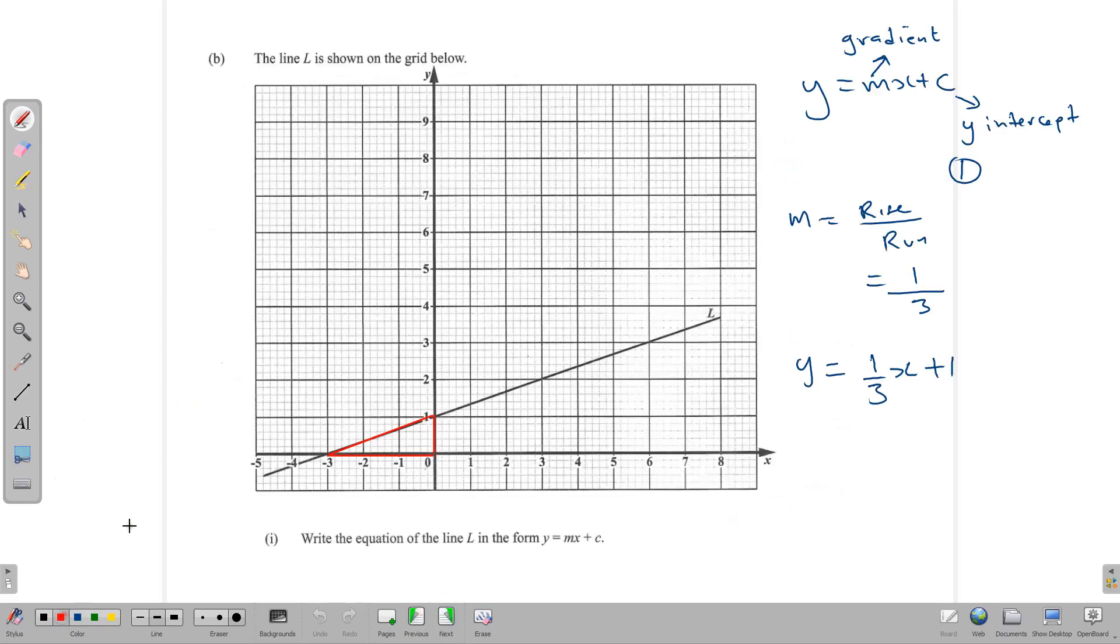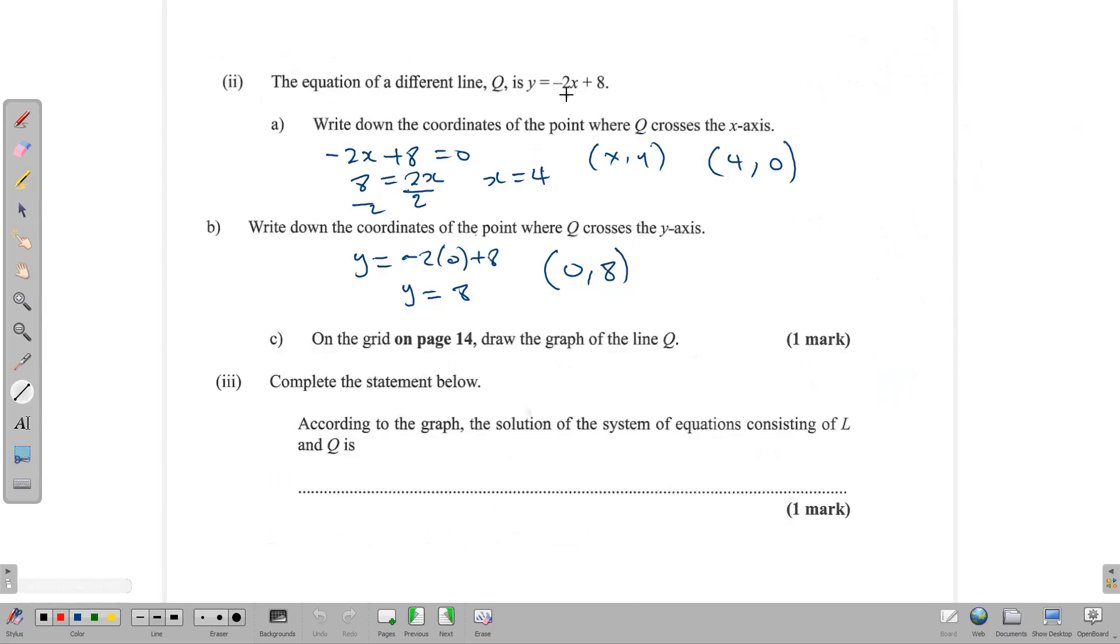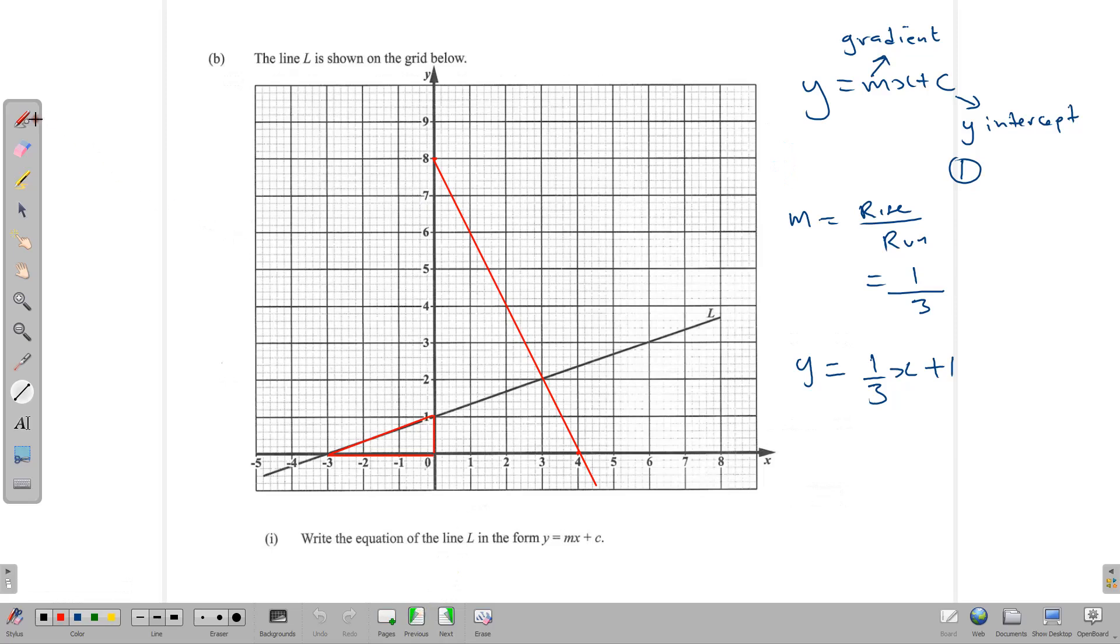On the grid, we're going to draw the graph of line Q. Since it's a straight line, all that we need are these two coordinates. So let's go back here and draw line Q with these coordinates: 4, 0 and 0, 8. Let's mark them: 4, 0 which is here, and 0, 8 which is here. So let's connect those with a straight line. This is the equation y equals minus 2x plus 8. And this one is y equals 1/3x plus 1.